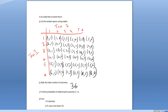Now we're going to find the probability of obtaining the outcome one comma five — that's rolling a one and then a five, in that specific order. It's not a five and a one; it's a one, then a five. Going through the table, there's only one possibility of that happening, so the probability is one in 36.